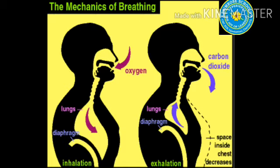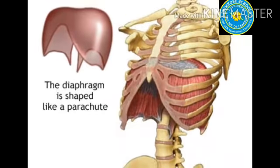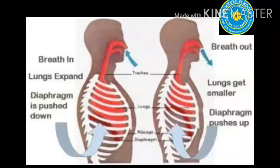We breathe in through our nose. When we breathe in, the air moves down through the windpipe and reaches our lungs. The lungs absorb only the oxygen from the inhaled air and carbon dioxide is exhaled. There is a special organ called the diaphragm below the lungs, which moves up and down when we inhale and exhale. The diaphragm expands while we inhale and contracts while we exhale.